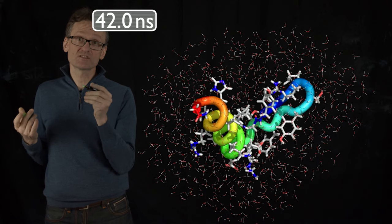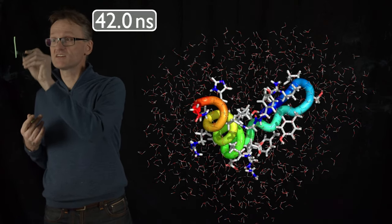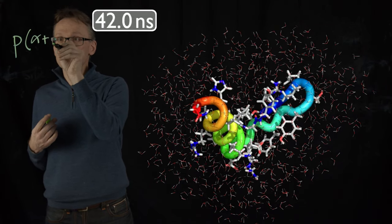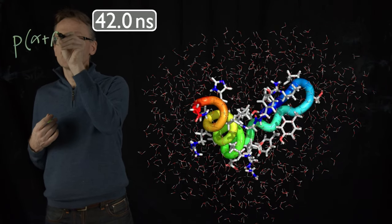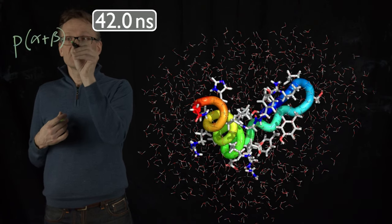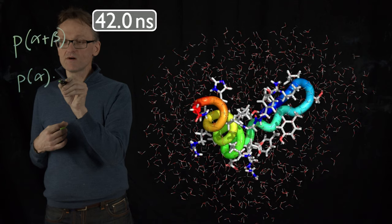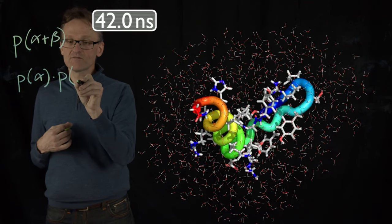The definition of two processes, if they are independent, is simply that the probability of having both the alpha helix and the beta sheet—compare that to the probability of having the alpha helix multiplied by the probability of having the beta sheet.